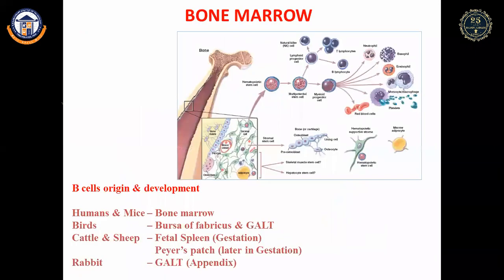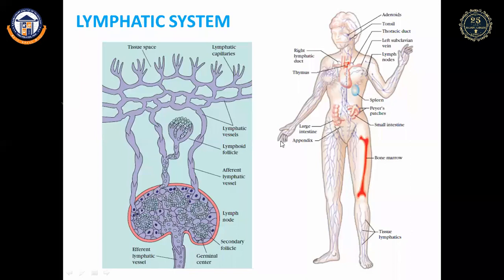The origin and development of B cells differ by species: in humans and mice it occurs in the bone marrow; in birds it is in the bursa of Fabricius; in cattle and sheep during gestation it is in the fetal spleen and later in Peyer's patches; in rabbit it is in the GALT region (appendix). B cells get developed before moving into secondary lymphoid organs.